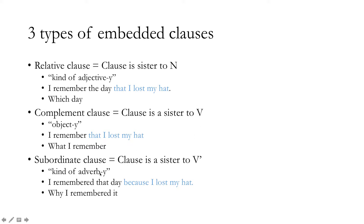Subordinate clauses are a sister not just to the verb but to a V-bar — they modify the combination of a verb and its object. They give optional, adjunct information about how some verb happened, making them kind of adverb-y. For example: 'I remembered that day because I lost my hat.' The clause 'because I lost my hat' is not the object of 'remember' — it's telling me why I remembered that day. It could also tell me when: 'I remembered that day after I lost my hat,' or how: 'I remembered that day like it was yesterday.'